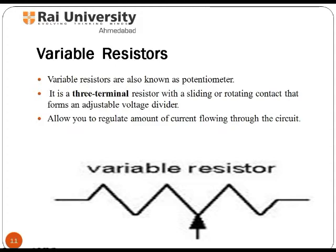Variable or adjustable resistors are often needed within a circuit to act as a preset control. The variable resistor is also widely referred to as a potentiometer, as a result of its configuration, and allows you to regulate the amount of current flowing through the circuit. The variable resistor comprises a fixed resistive element along with a slider.